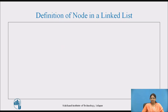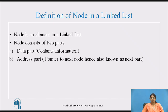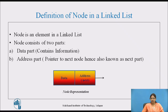Definition of a node in a linked list: A node is an element in a linked list. It consists of two parts. The first part is called the data part which contains the information, and the second part is called the address part which is the pointer to the next node, also known as the next part. The node representation shows these two parts: the data part holds the information, and the second part holds the address of the next node.